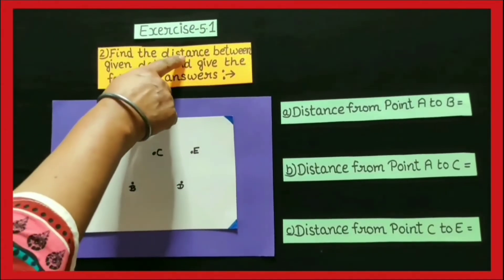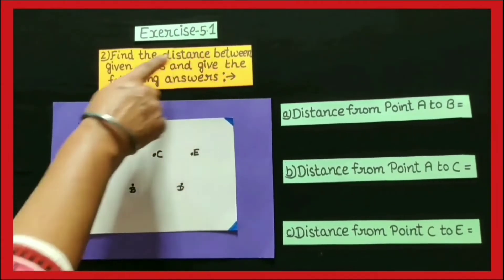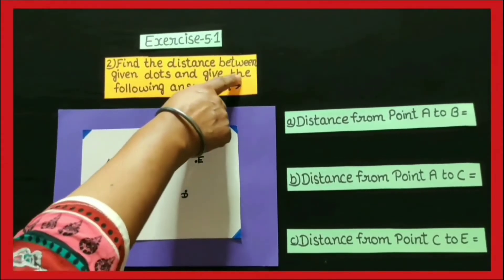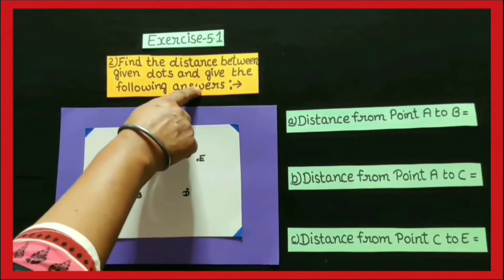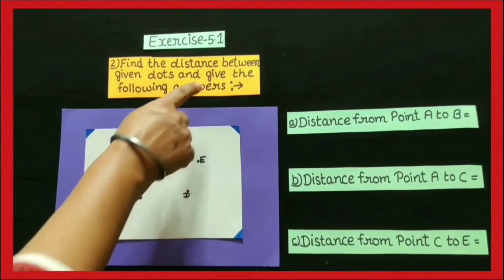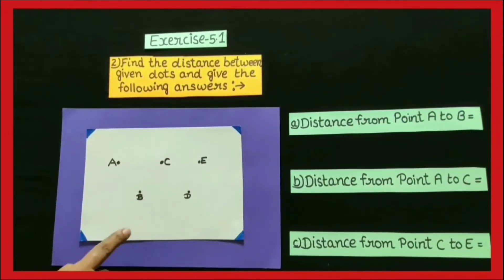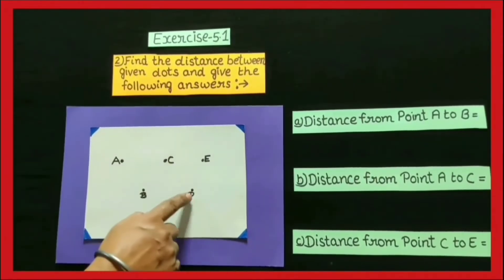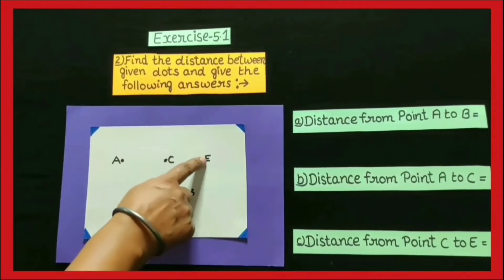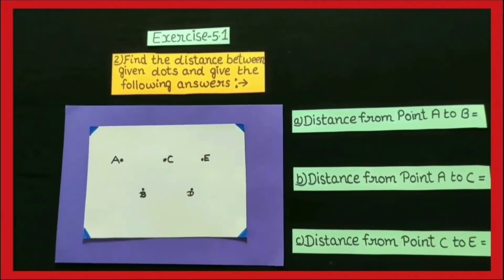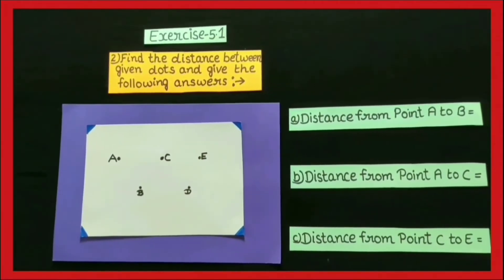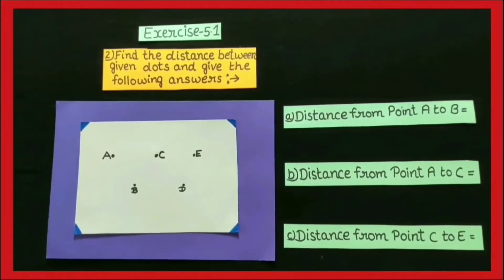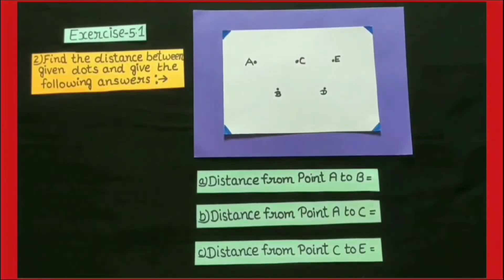We will now discuss the second sum: find the distance between the given dots and give the following answers. In this, some dots are given — A, B, C, D, and E. We have to answer the following questions by measuring the distance between these points. So, let's start.